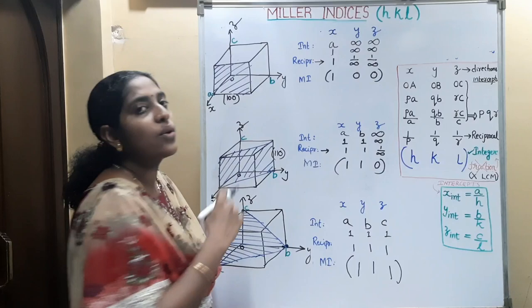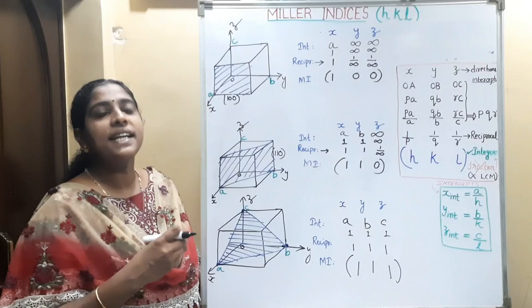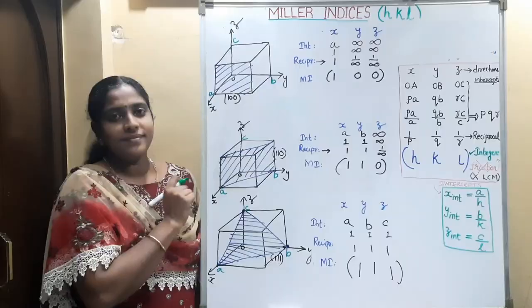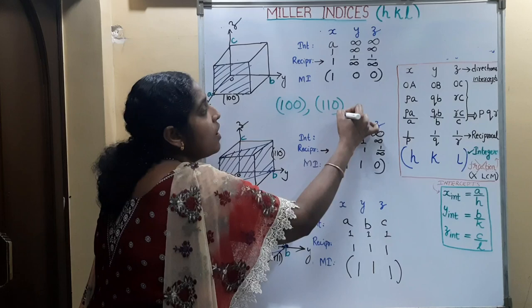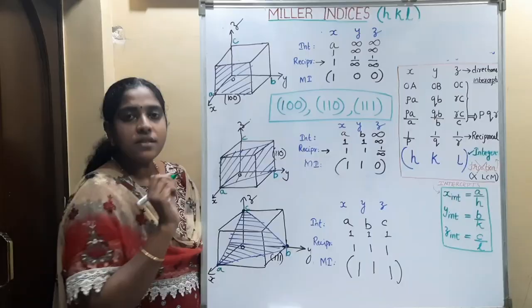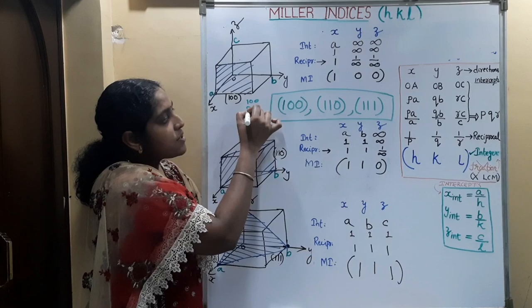In Miller indices, if we have a 0, that means the intercept along that axis is infinity. The reason we take the reciprocal is to avoid infinity appearing in the Miller indices. The (1,0,0), (1,1,0), and (1,1,1) planes are very important in crystal structure study and are known as the principal planes in crystallography.